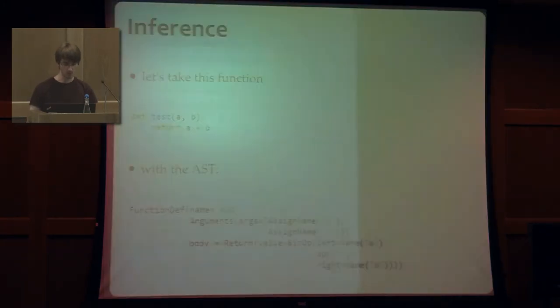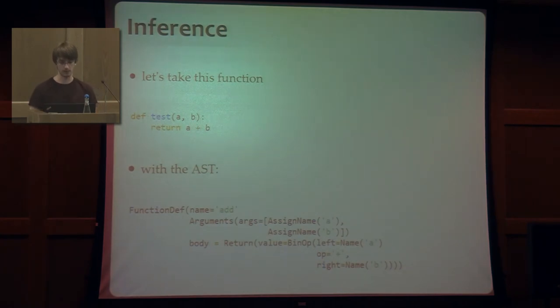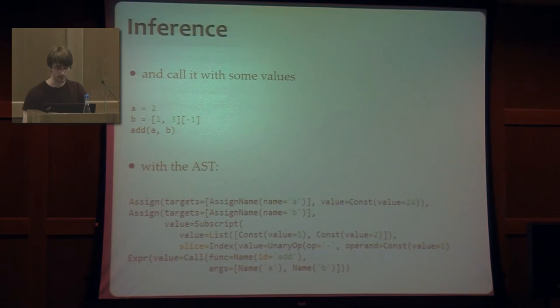And what will happen? First, the A name is going to be inferred and that name is going to be 2 because it's quite simple in this case. But for B, that's going to be a little bit more complicated because first we have to see what B really is. And B is a subscript node which has a list and there's an index on that list. And according to the inference rules, we're going to infer what the subscript does and it's going to retrieve the 3 value from the list. And then it's going to be passed later on.